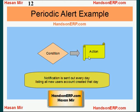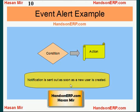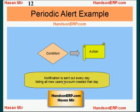Let's take the same example. You have defined a condition as when a new user is created and you want to be notified. In the case of a Periodic Alert, the notification will be sent out on schedule — let's say on a daily basis, nightly or every morning — listing all the users that were created that day. So in the case of an Event Alert, notification is sent as soon as a new user is created, while a Periodic Alert sends notification on a predefined schedule, listing all users created within a specified duration, for example that day.